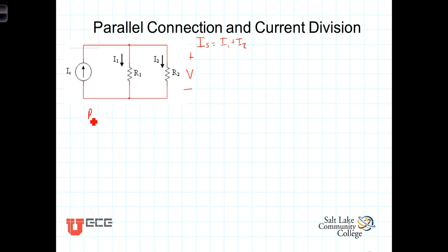Using the expression for the equivalent resistance for two parallel connected resistors that we derived in a previous video, the equivalent resistance is R1 R2 over the sum R1 plus R2.